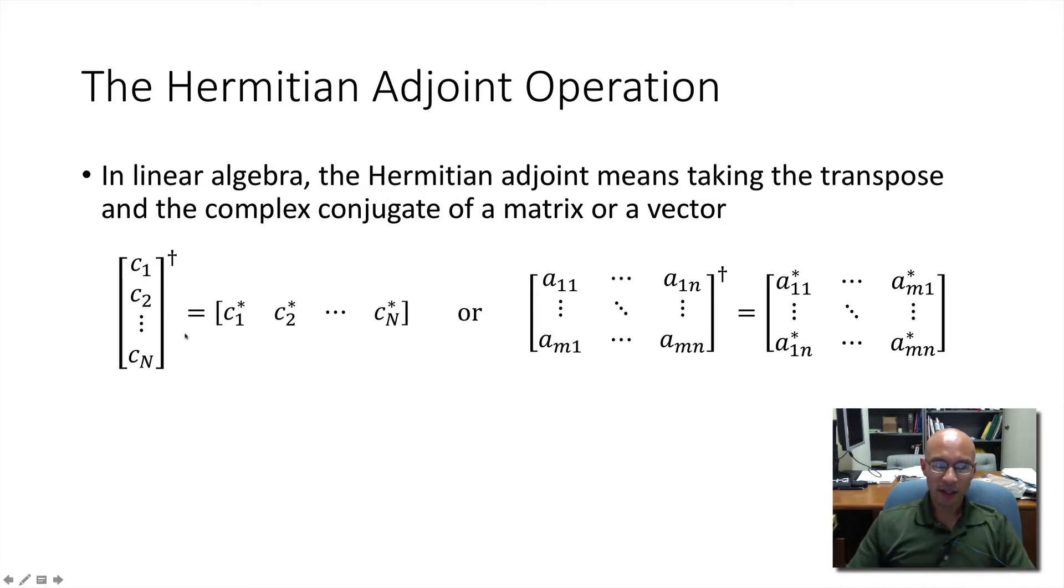So here's a column vector that represents a ket. And we take the Hermitian adjoint and we get this transposed and conjugated row vector that represents bra psi. And for an arbitrary matrix of a certain size, you transpose it and you conjugate it. And that's the Hermitian adjoint operation.